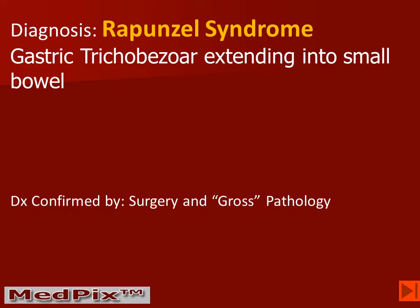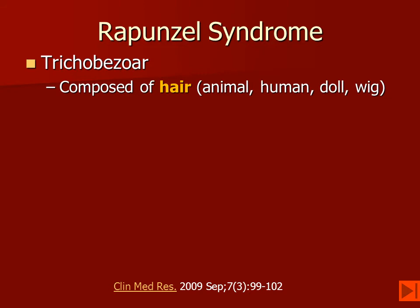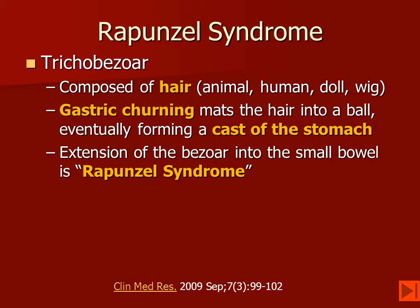This is a case of Rapunzel syndrome. What is Rapunzel syndrome? It is a trichobezoar composed of hair — which may be human, animal, doll hair, or wig hair — matted into a cast of the stomach by gastric churning. The extension of the bezoar into the small bowel transforms it into Rapunzel syndrome, named after the Grimm fairy tale of Rapunzel who let her hair out the window to escape from the tower.